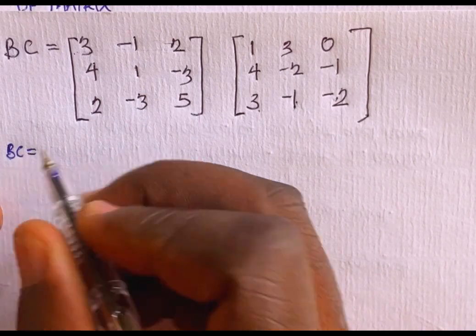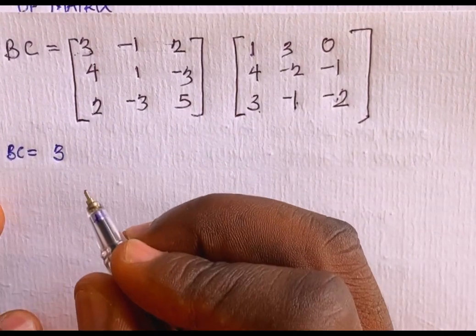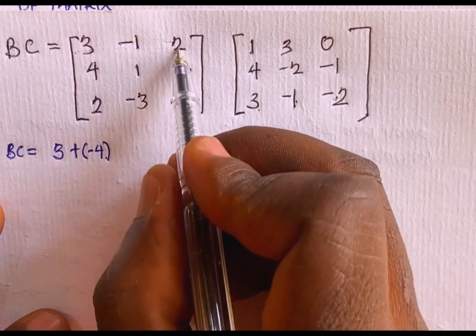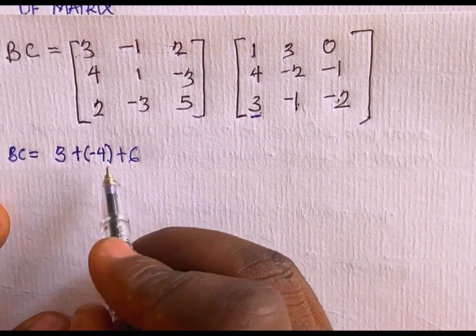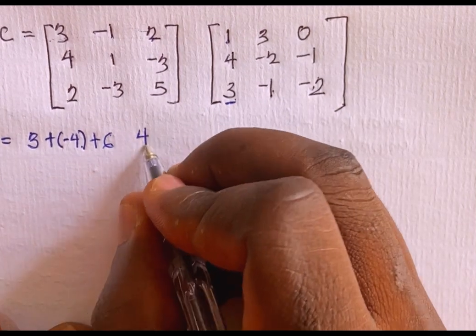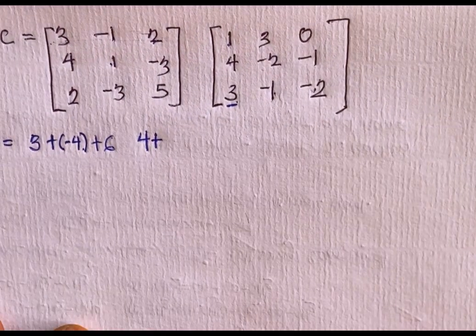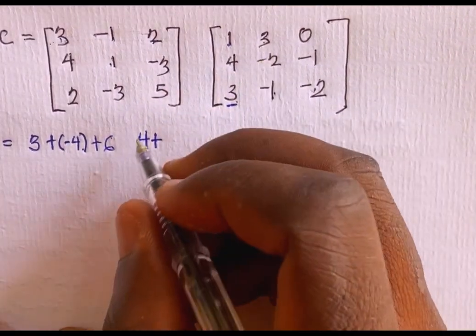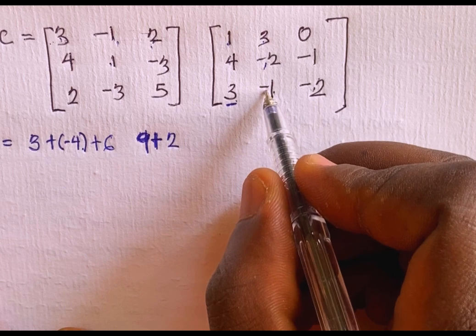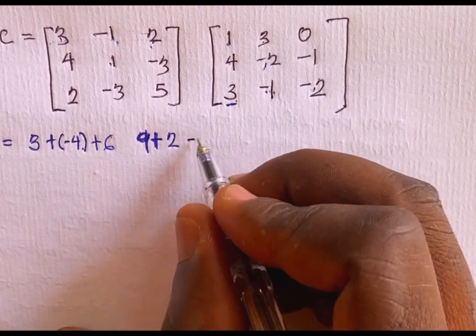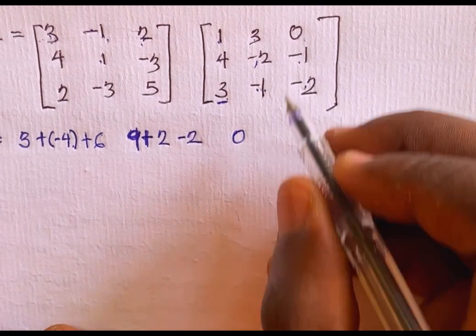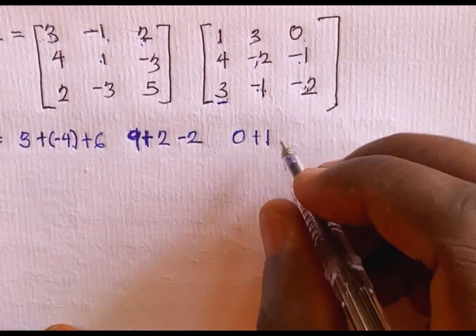Computing BC: for the first row of B times first column of C: 3×1 + (-1)×(-4) + 2×6. For the first row times second column: 3×3 + (-1)×(-2) + 2×(-1) = 9 + 2 - 2. For the first row times third column: 3×0 + (-1)×(-1) + 2×(-2) = 0 + 1 - 4.